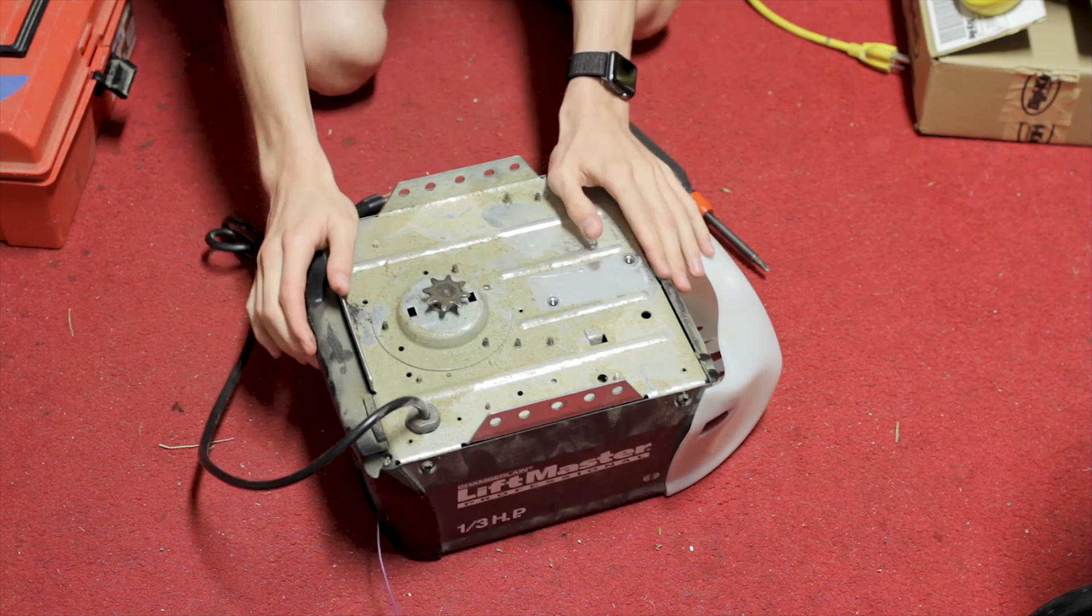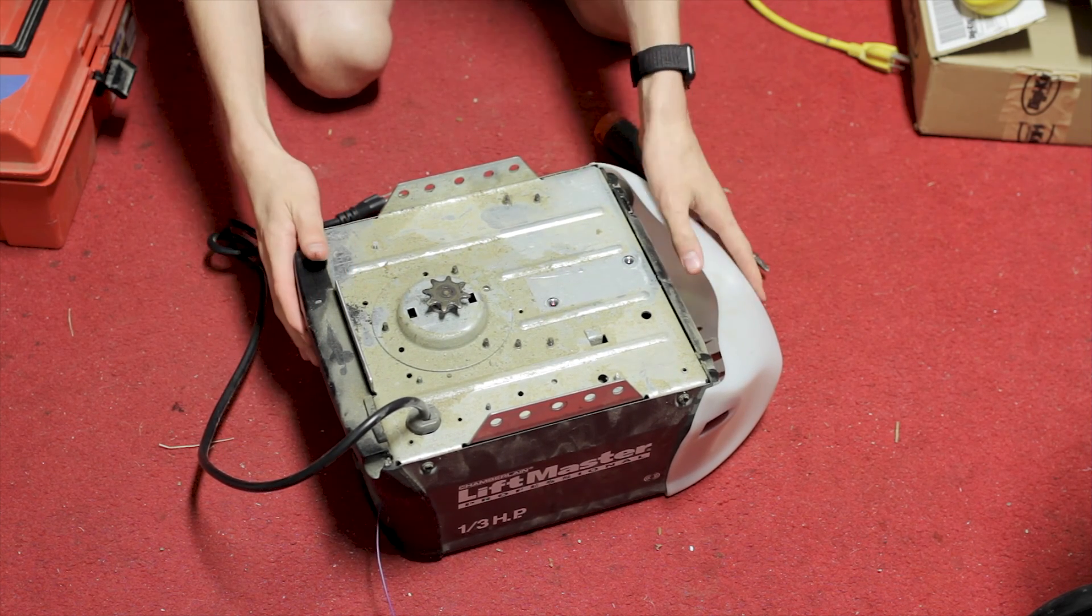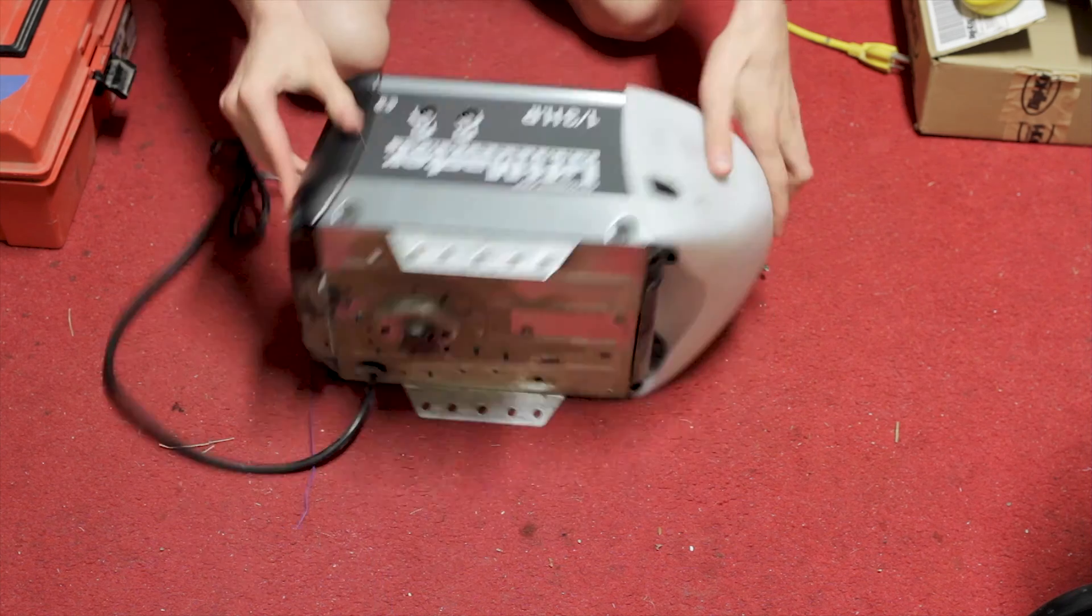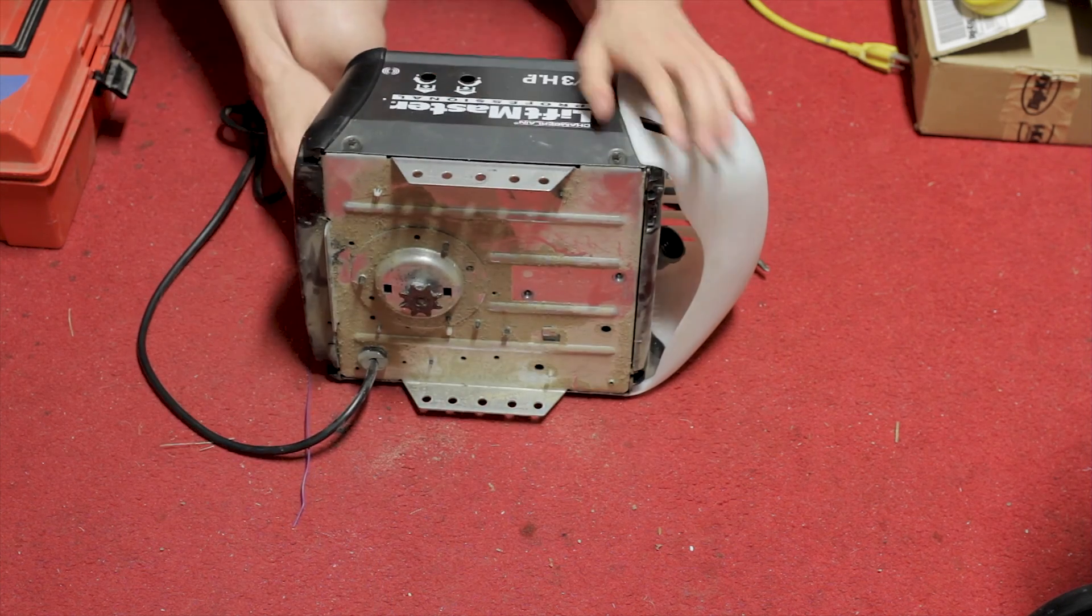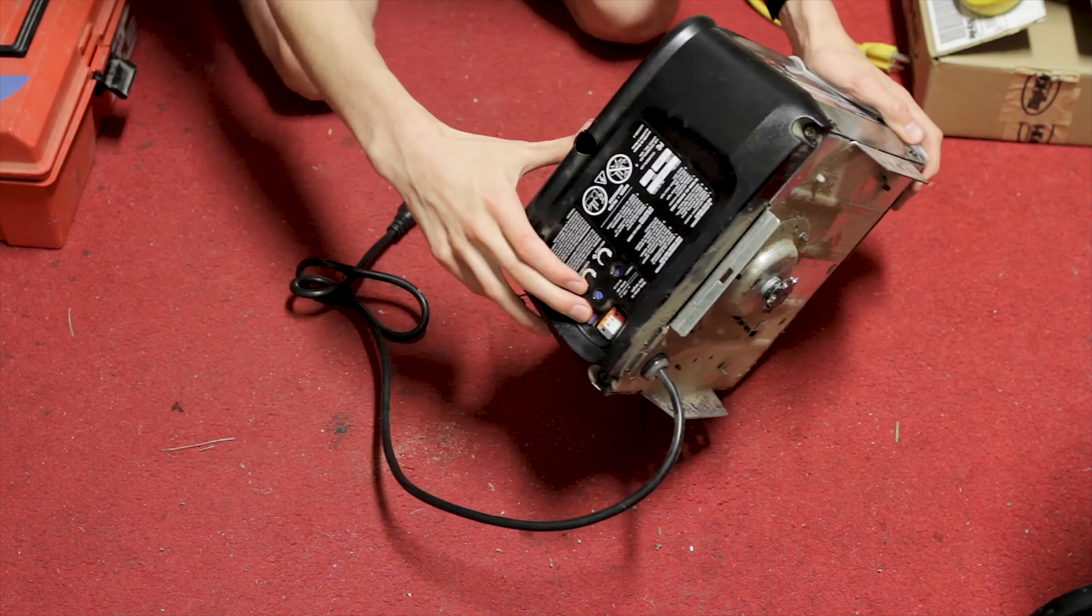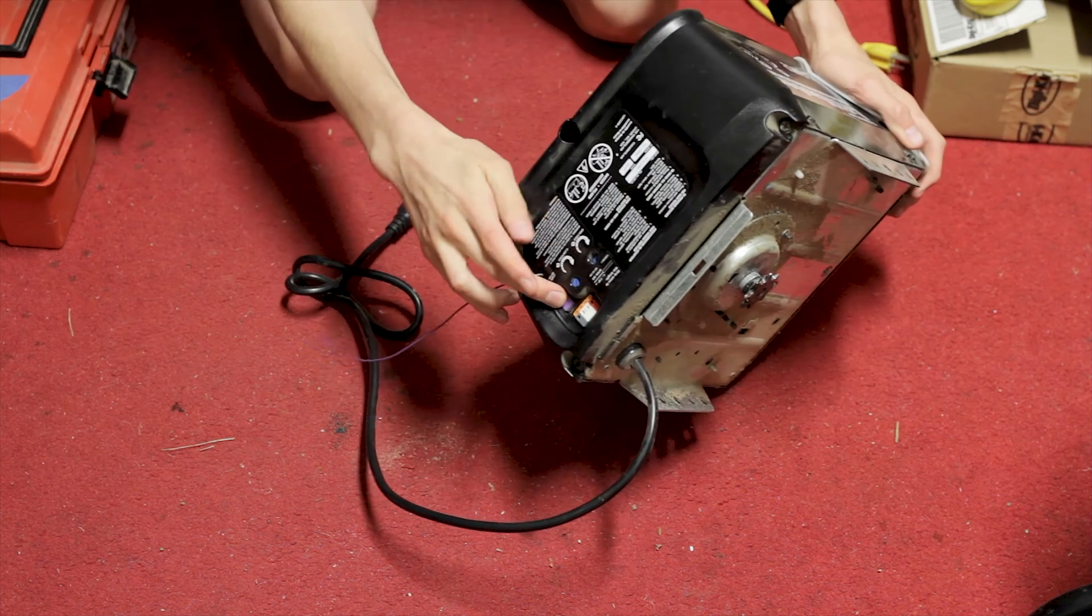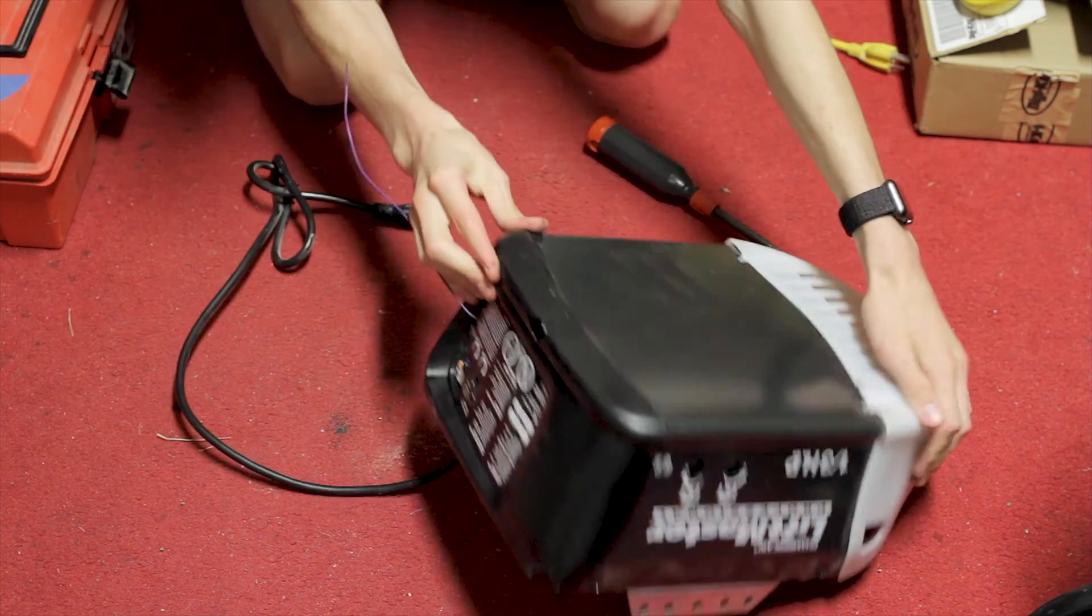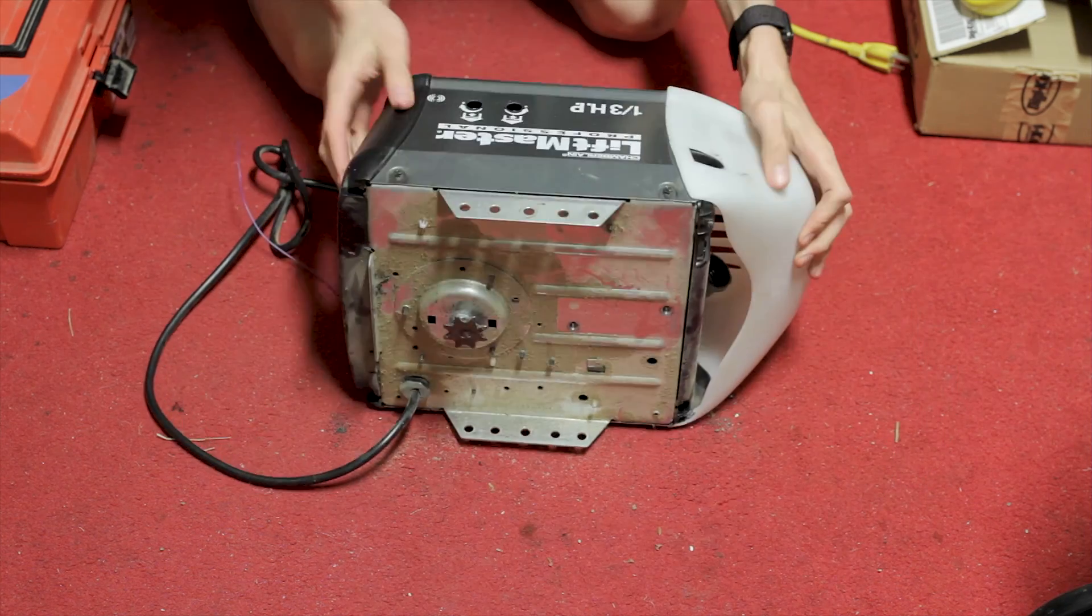They're pretty simple. You've got a bearing, a few adjustments for how far up and down you go, a few connectors on the back, probably a circuit board in here for controlling it, a little antenna. I'm guessing it's running on the 2.4 rail.